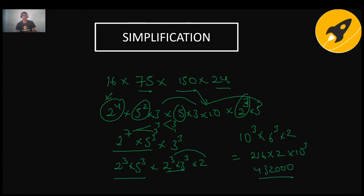This trick significantly reduces calculation time. Instead of multiplying each number sequentially, break them into prime factors, identify pairs of 2 and 5 to form powers of 10, then multiply only the remaining smaller numbers. You should be quick at recognizing exponential values and extracting 10s from a product.